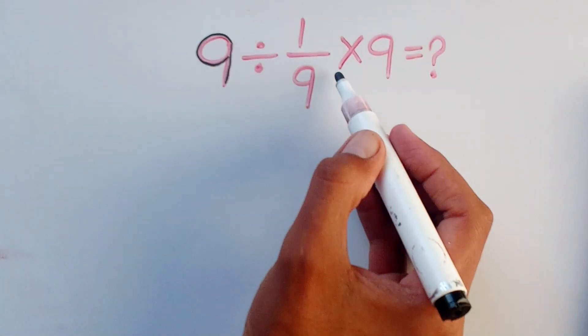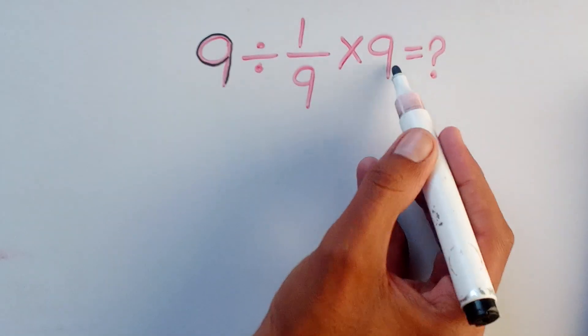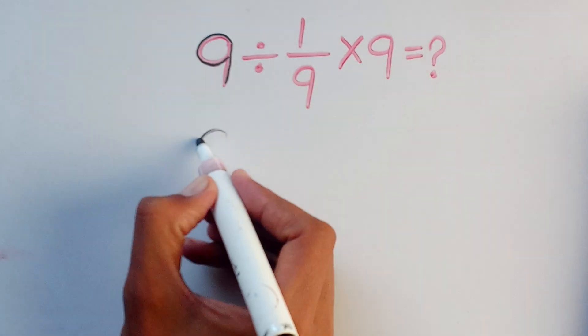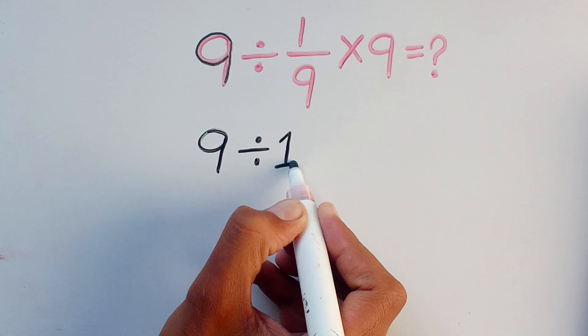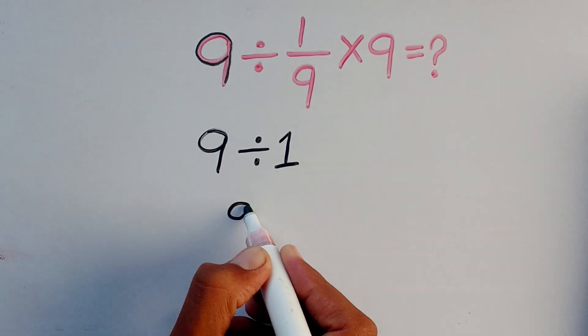Student, we can easily cancel this 9 and this 9 and we can write 9 divided by 1. So, 9 divided by 1 equals to 1.